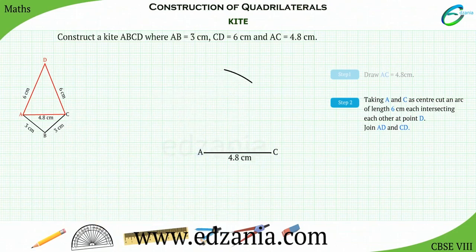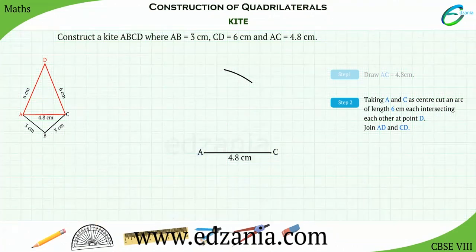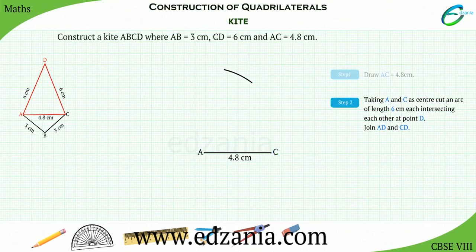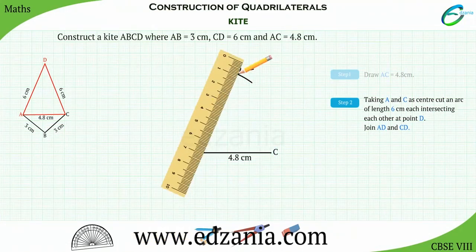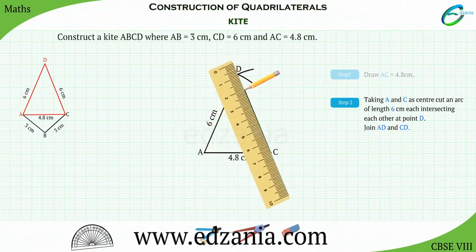Repeat the procedure by placing the compass pointer at point C. Let the two arcs intersect at point D. Join AD and CD.